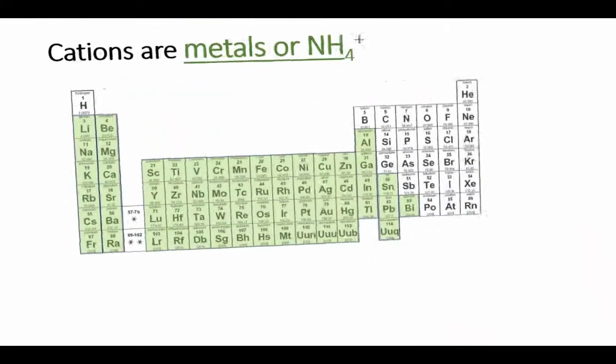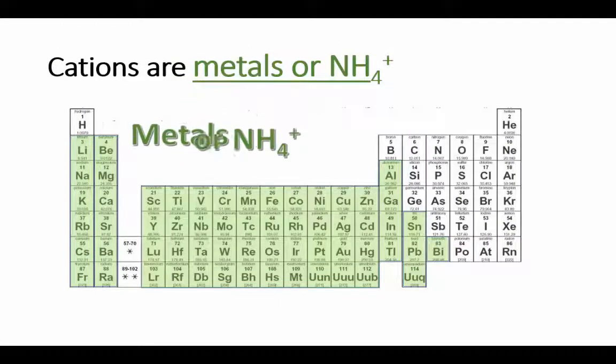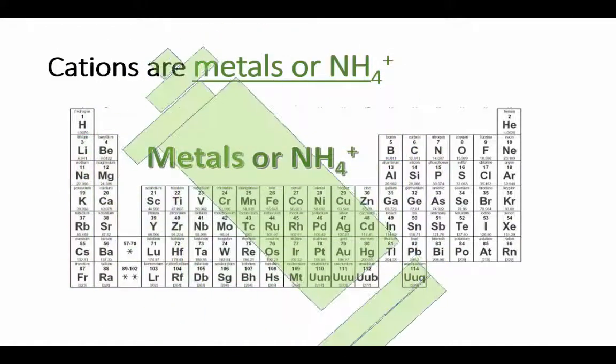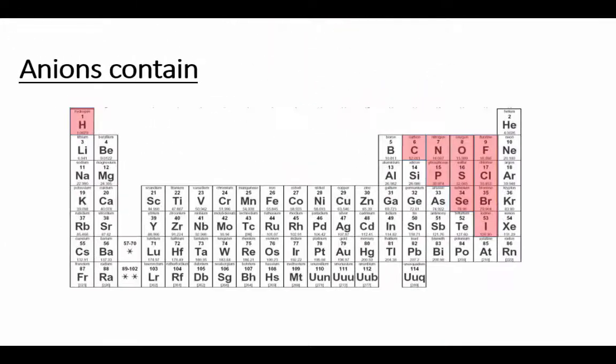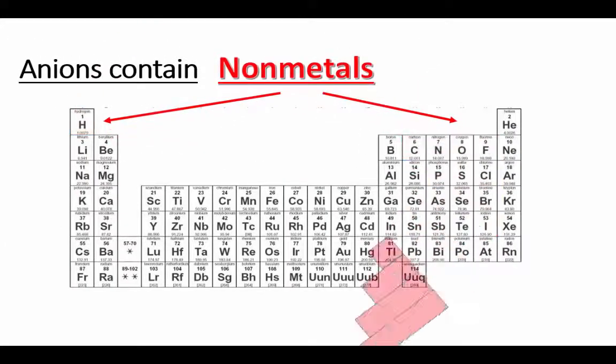Remember that cations are metals, which you see highlighted here in green, or ammonium. The non-metals here are highlighted in red and our anions will contain non-metals.